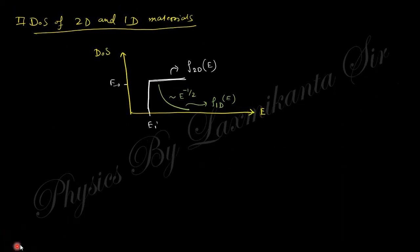Finally you will obtain E to the power minus one-half. So in a single graph we can see that for two-dimensional this is constant, and this is for one-dimensional which is reduced.